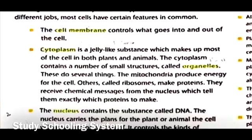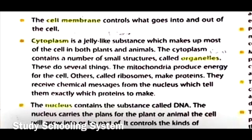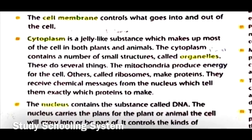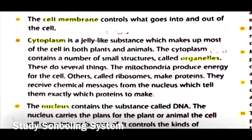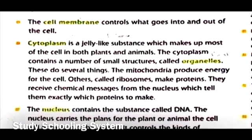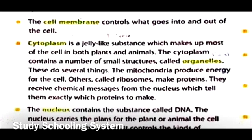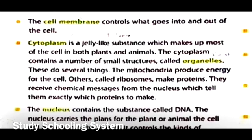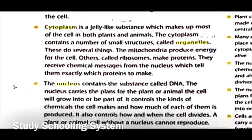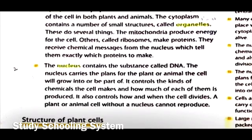'Cytoplasm is a jelly-like substance which makes up most of the cell. In both plants and animals, the cytoplasm contains a number of small structures called organelles. These do several things — the mitochondria produces energy for the cell. Others called ribosomes make proteins; they receive chemical messages from the nucleus which tell them exactly which proteins to make.'